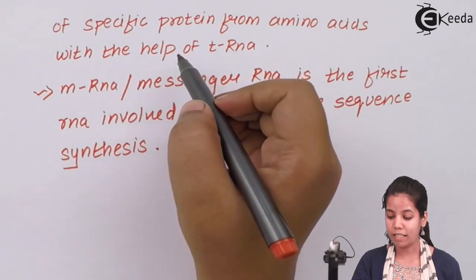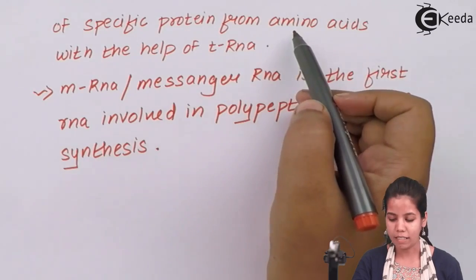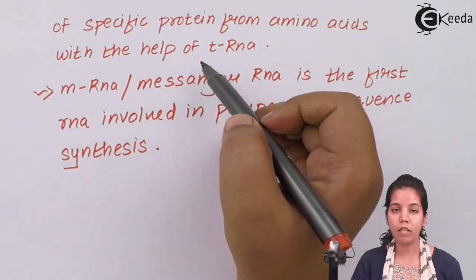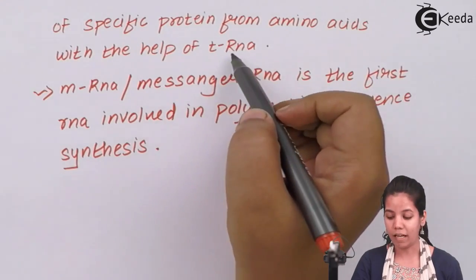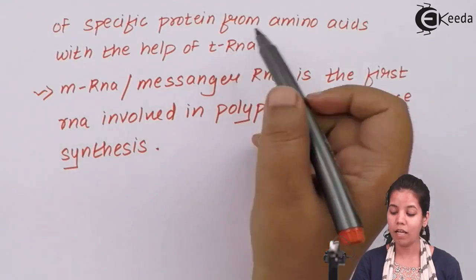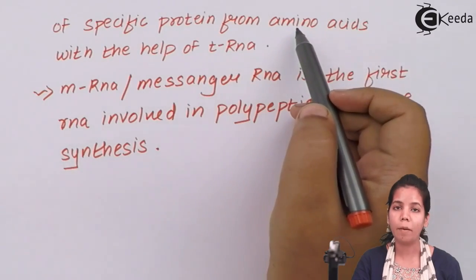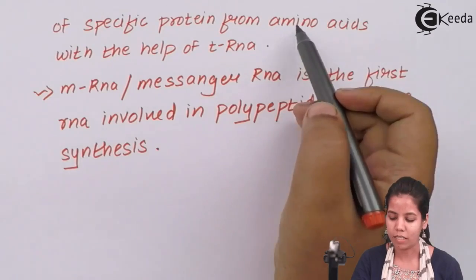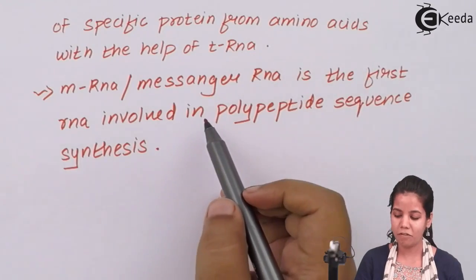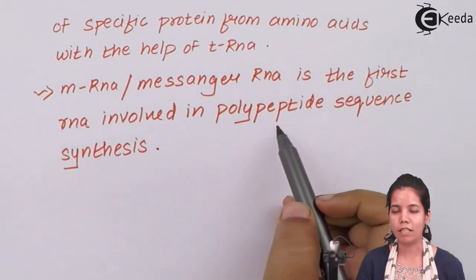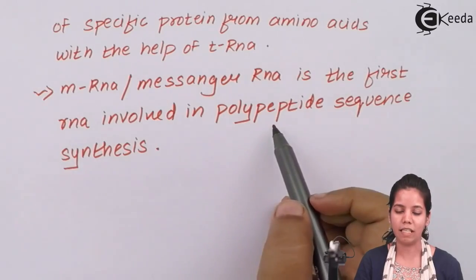mRNA provides amino acid sequences with the help of tRNA. tRNA will have the anticodon sequence, whereas the amino acid sequence on mRNA is the codon sequence. Messenger RNA is the first RNA involved in protein synthesis or polypeptide sequence synthesis.